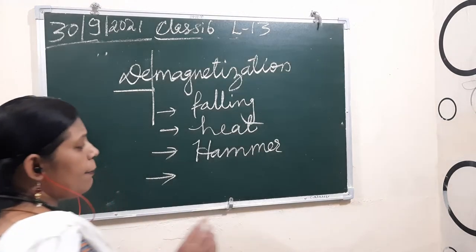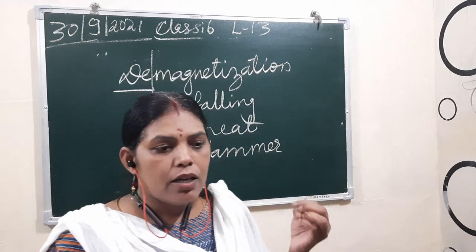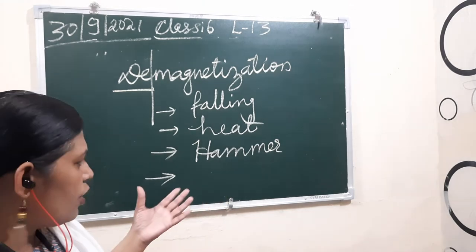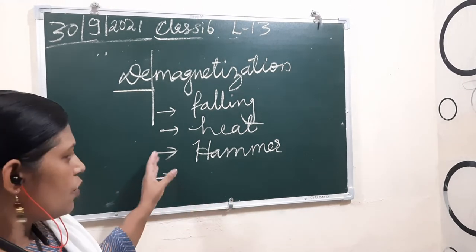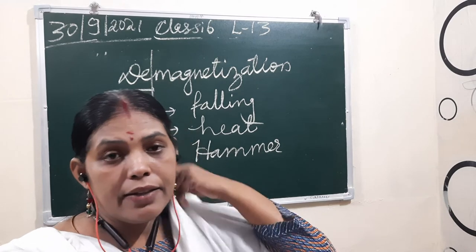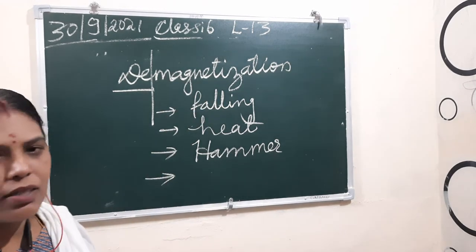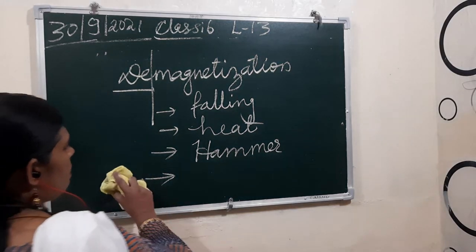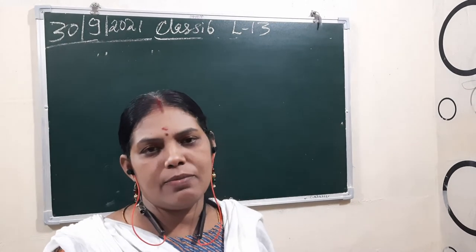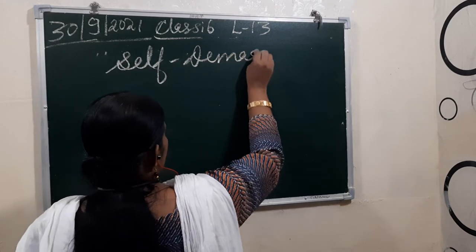One more cause of demagnetization: if we bring a magnet near devices like a television, computer, cassettes, or speakers — those devices already have magnets and iron inside. Bringing another magnet near them causes magnetic effects to pass, which may cause attraction or repulsion. Because of this interaction, the magnet can lose its magnetic power.